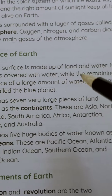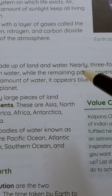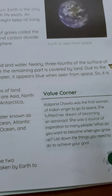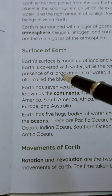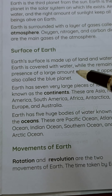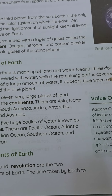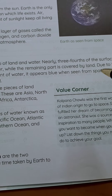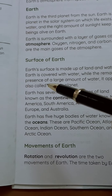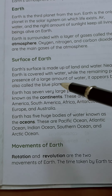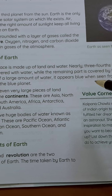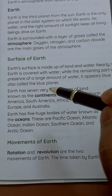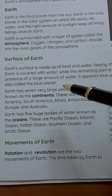Earth's surface is made up of land and water. Nearly three-fourths of the surface of the Earth is covered with water, while the remaining part is covered by land. Due to the presence of a large amount of water, it appears blue when seen from space. So it is also called the blue planet.